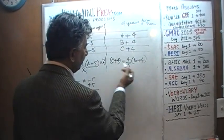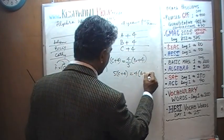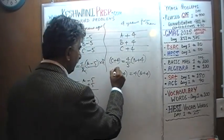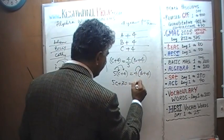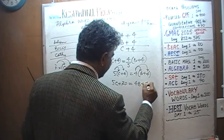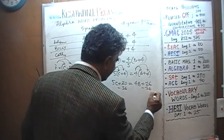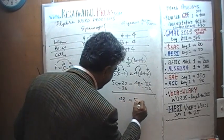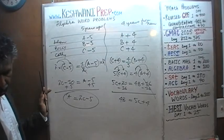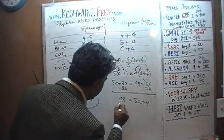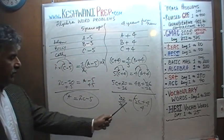Solving equation three for B: multiply both sides by 5. We get 5(C plus 4) equals 4(B plus 4), which expands to 5C plus 20 equals 4B plus 16. Subtract 16 from both sides: 4B equals 5C plus 4. Divide both sides by 4: B equals (5C plus 4) over 4. We now have both A and B in terms of C.